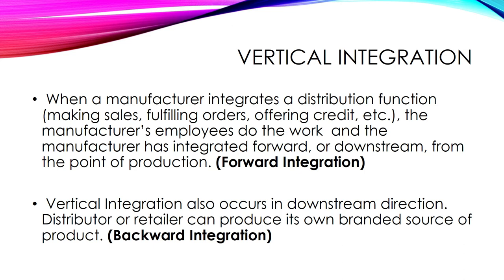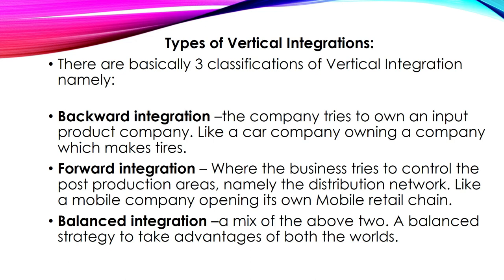Vertical integration also occurs in a downstream direction, wherein a distributor or retailer produces its own branded product — that is backward integration. For backward integration, the company tries to own an input product company, like a car company owning a company that makes tires. In the Good Taste example, they are retailers but at the same time producers — that is backward integration.